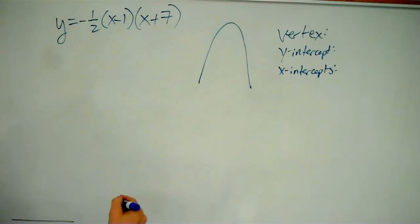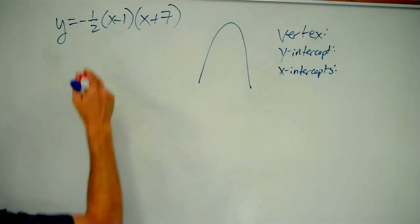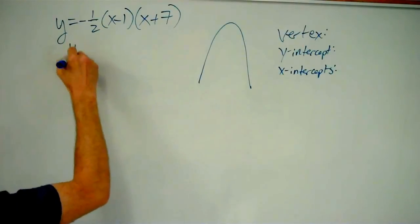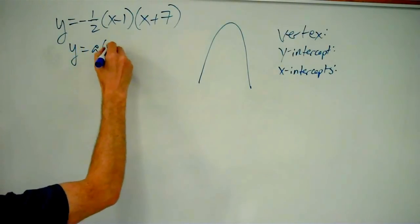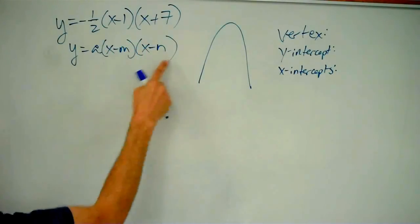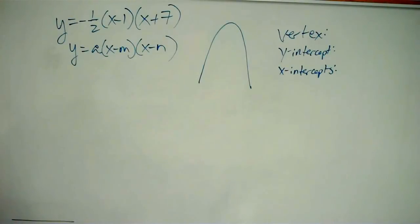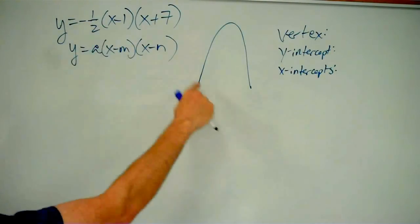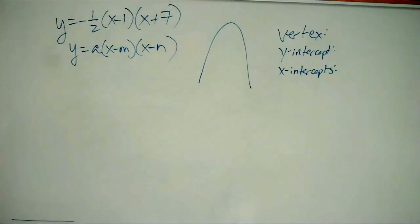I know that because it's a quadratic function, and quadratic functions have the shape of a parabola. And this parameter right here, the parameter I generally refer to as a, because y equals a times x minus m times x minus n is the factored form or the intercept form of our quadratic function. Whenever a is negative, it's an upside-down parabola.